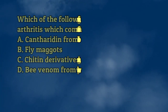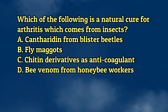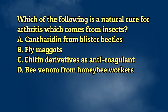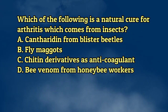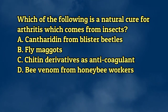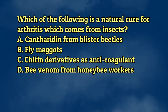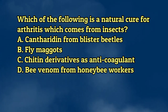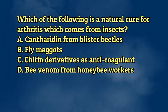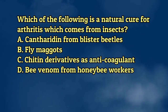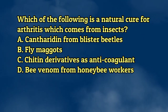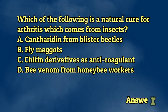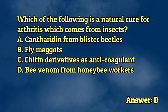Which of the following is a natural cure for arthritis which comes from insects? A. Cantharidin from blister beetles. B. Fly maggots. C. Chitin derivatives as anticoagulant. D. Venom from honeybee workers. The answer is letter D.